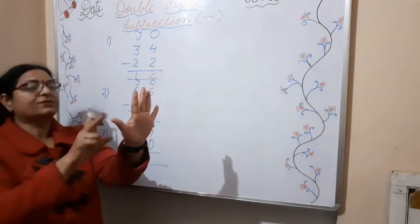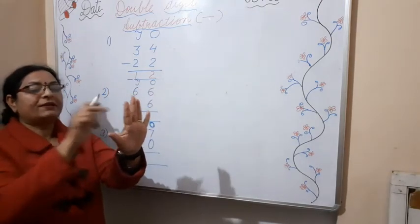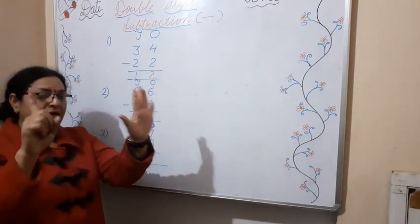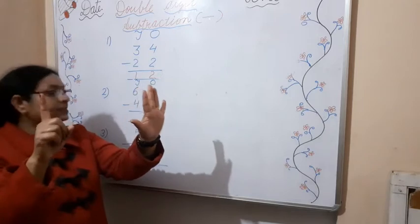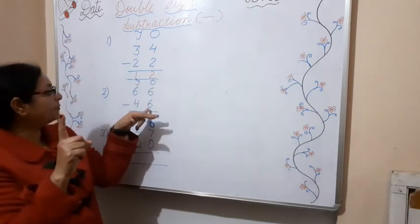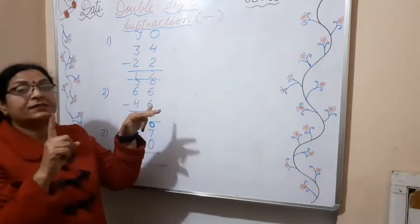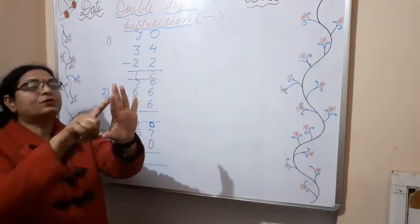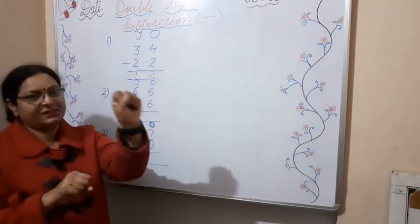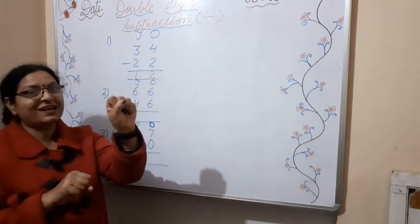Here is number 6. So you have to take out 6 fingers: 1, 2, 3, 4, 5, and 6. You have to take out 6 fingers and subtract 6 numbers. How many numbers will you subtract? 6 numbers: 1, 2, 3, 4, 5, and 6. Your answer is 0.